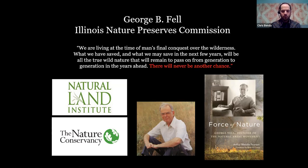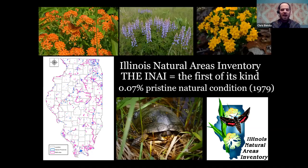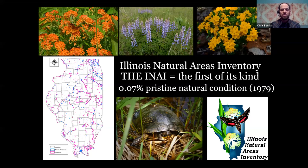George's work creating the Illinois Nature Preserves Commission led to the INAI, the statewide inventory to find natural areas throughout the state. Unfortunately, the initial push found that just 0.07% of the state is considered to be in a pristine natural condition. You can see on the map that natural areas are pretty well distributed throughout Illinois — 102 counties, and only two, Franklin and White, do not have a category one natural area. A lot of them are privately owned, and although what we have left is pretty small, it's priceless biological heritage.